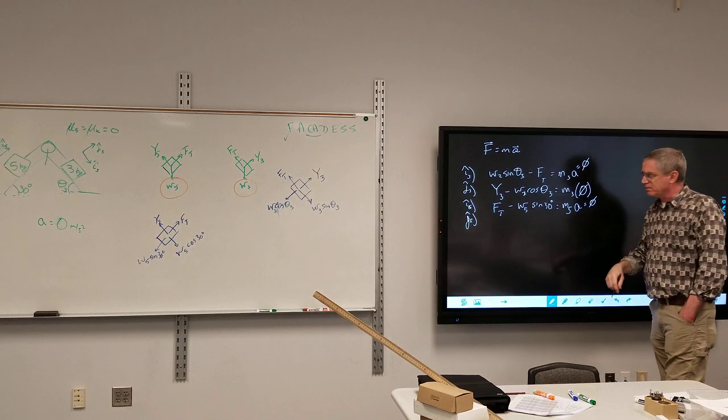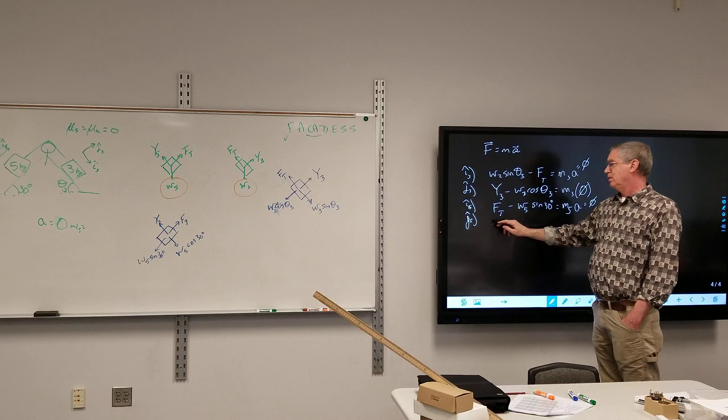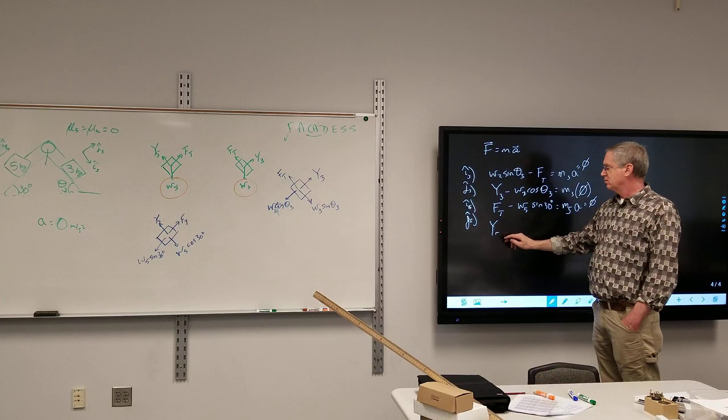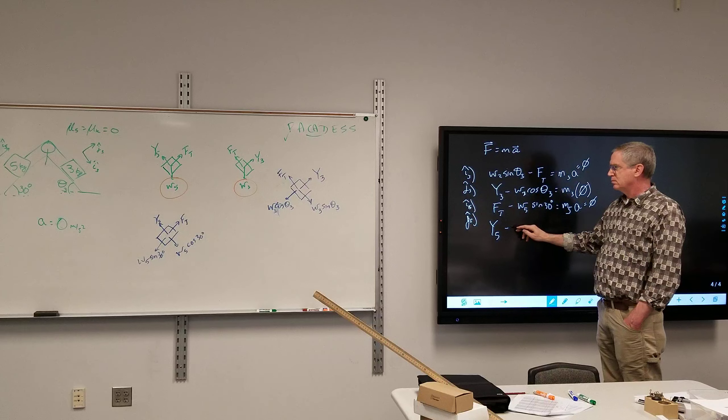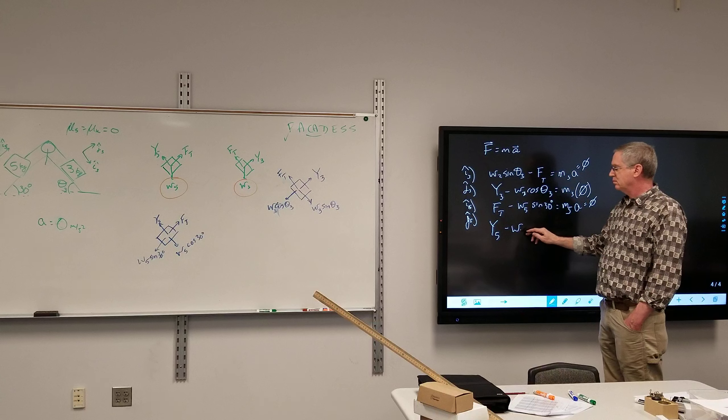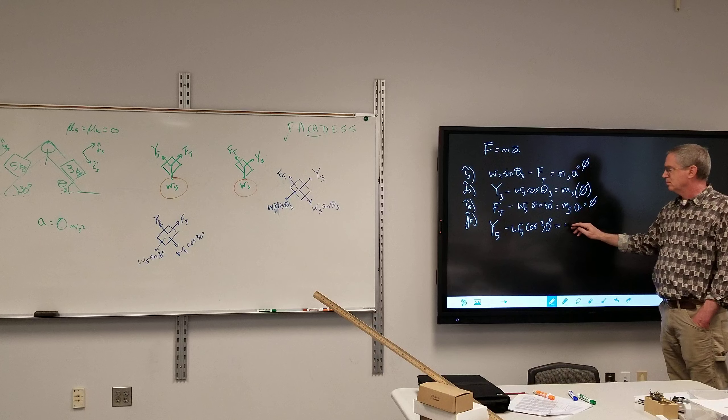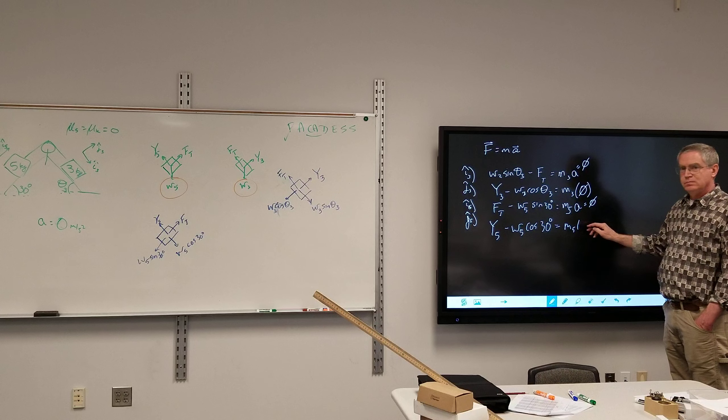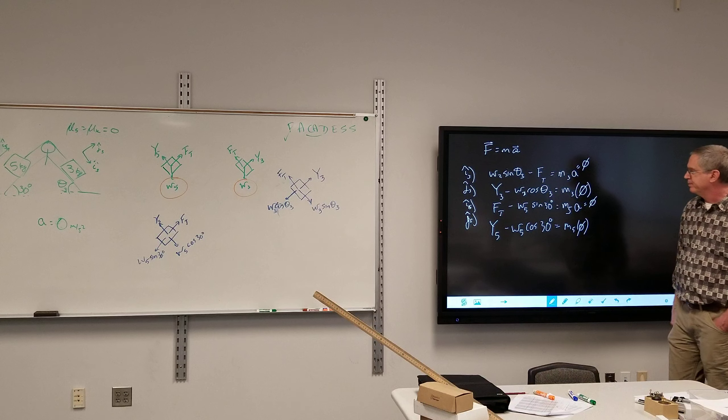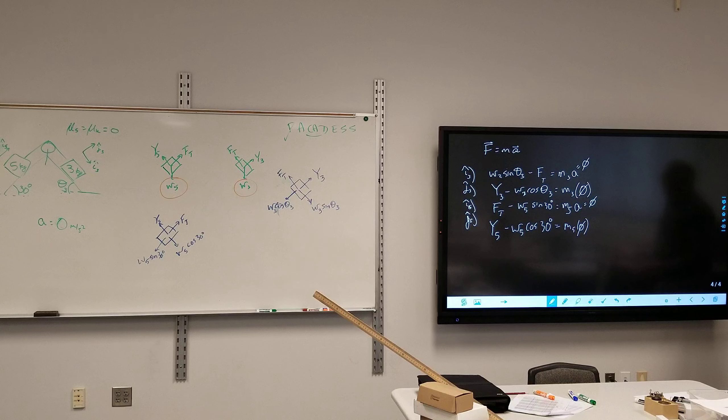And then our last equation. Normal sub five minus... We have our equations of motion. Questions up to here. All of these equal zero. They all equal zero because it is an equilibrium.